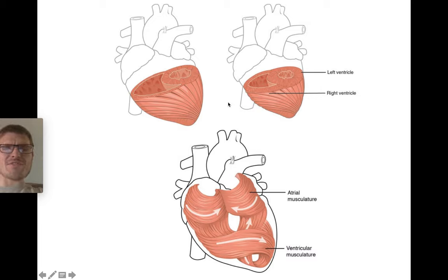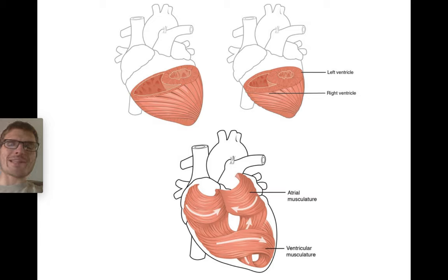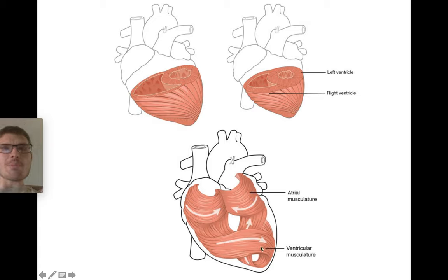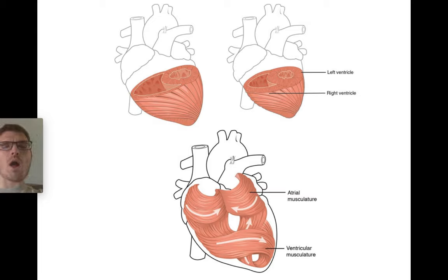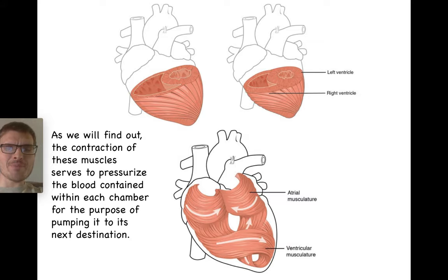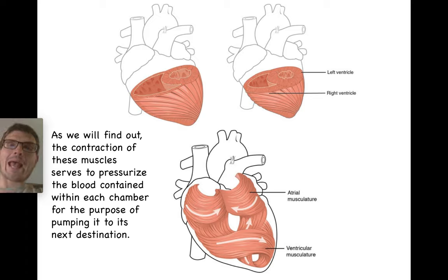This figure gives a good idea of what the myocardium looks like with respect to the cavities inside the heart — the chambers, specifically the ventricles and the atria, where blood is contained before it gets pumped to its next destination. You can see the musculature of both the atria and ventricles. Picture these muscles contracting — imagine squeezing a water balloon. When these muscles contract, they squeeze the blood much the same way, pressurizing it so we can push it along from atria to ventricles, and from ventricles out into the various arteries.